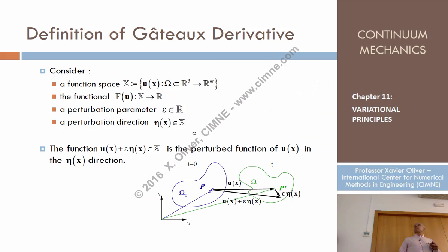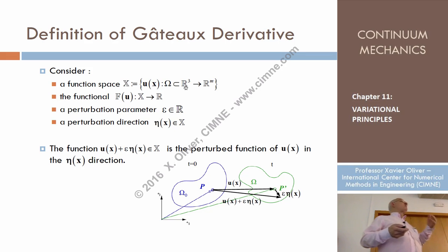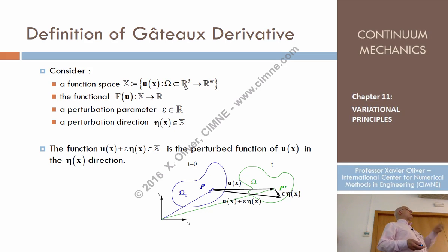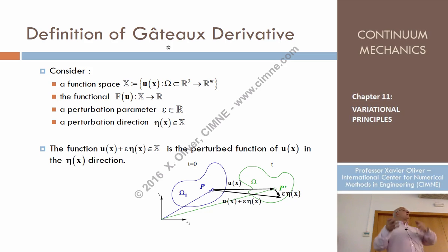In the same way that when we take functions we can get derivatives of functions — you know a function is a mapping and you can take partial or total derivatives — when we have a functional, the equivalence is a derivative too, but a little more complex. It's called the Gâteaux derivative. So for functionals we define Gâteaux derivatives.